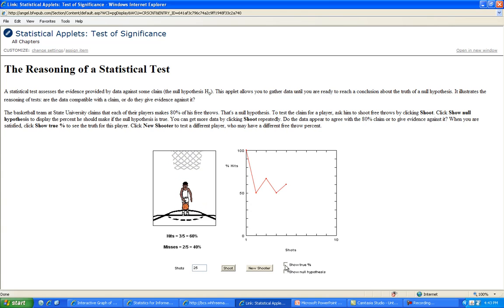Keep shooting. Now we're going to show the null hypothesis—the null hypothesis is 80% of the hits. He's not doing too well. Maybe plays for Butler. We show the true percentage. He's close to 50% rather than 80%. He's shooting 25 times, so he's all done.